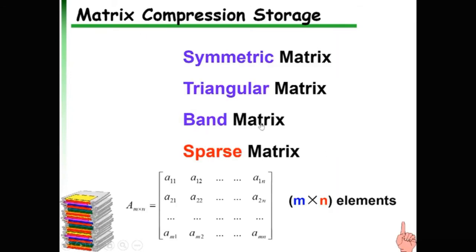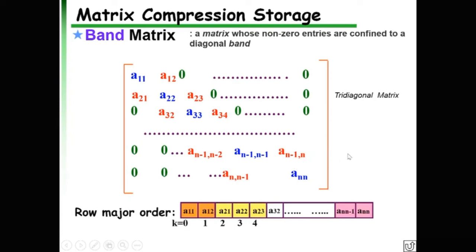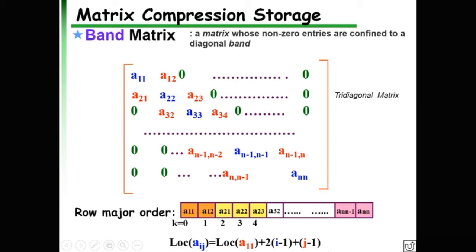The next special matrix is the band matrix, whose non-zero entries are confined to a diagonal band. For example, a tridiagonal matrix. Following row-major order, we can derive a formula to calculate each element's location. For instance, if the row index is 2 and the column index is 3, we substitute into the formula. In this way, we can save computer memory storage.